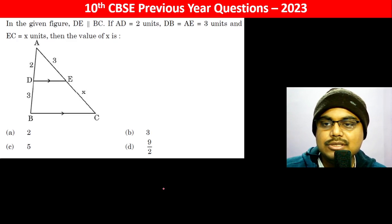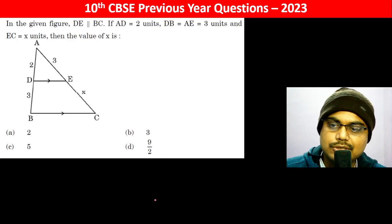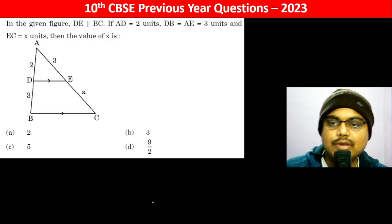In the given figure, DE is parallel to BC. If AD equals 2 units, DB equals AE equals 3 units, and EC equals X units, find the value of X.